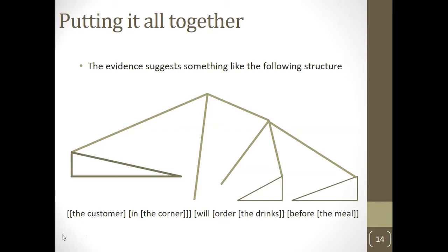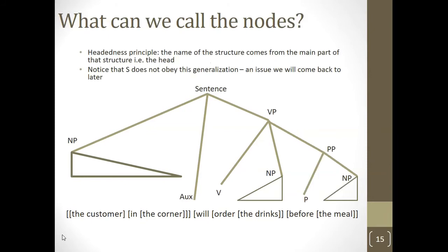We want to go further and ask: what are those chunks, what would we call them? Thinking back to linguistics one, we said the whole thing together is a sentence, so let's call that S. We also adopted the headedness principle — the idea that each structure has a main part called the head. The head is the item that gives the structure its name: a noun phrase is headed by a noun, a verb phrase by a verb, a prepositional phrase by a preposition. Interestingly, S does not seem to obey this generalization, which looks anomalous and leads to some criticism of this approach.